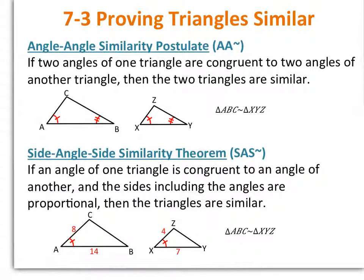In section 7.3, we will look at proving triangles similar. A few of our postulates and theorems. The angle-angle similarity postulate says if two angles of one triangle are congruent to two angles of another triangle, then the two triangles are similar.